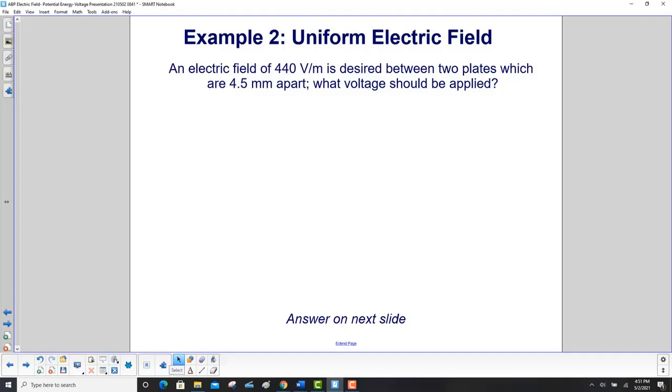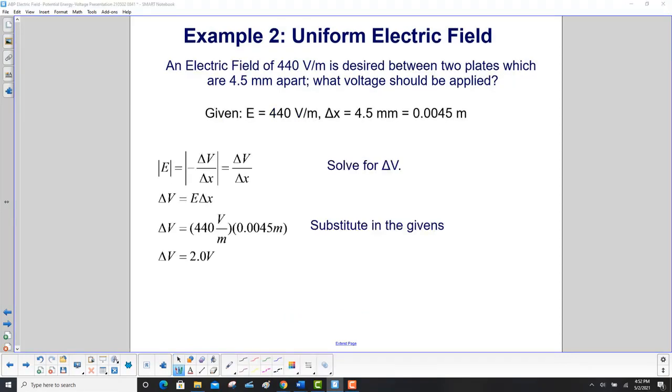An electric field of 440 volts per meter is desired between two plates which are 4.5 millimeters apart. What voltage should be applied? Here's our electric field and this time instead of newtons per coulomb it's volts per meter. Same thing. We have to convert the distance between the plates to meters and you move the decimal over three to convert millimeters to meters. And once again we're just looking for an absolute voltage so we take the magnitude here which is the absolute value of both sides. We multiply both sides by delta x because we want to solve for delta V, and we have delta V is equal to the electric field times the distance between the plates, and we get a voltage difference of 2.0 volts.